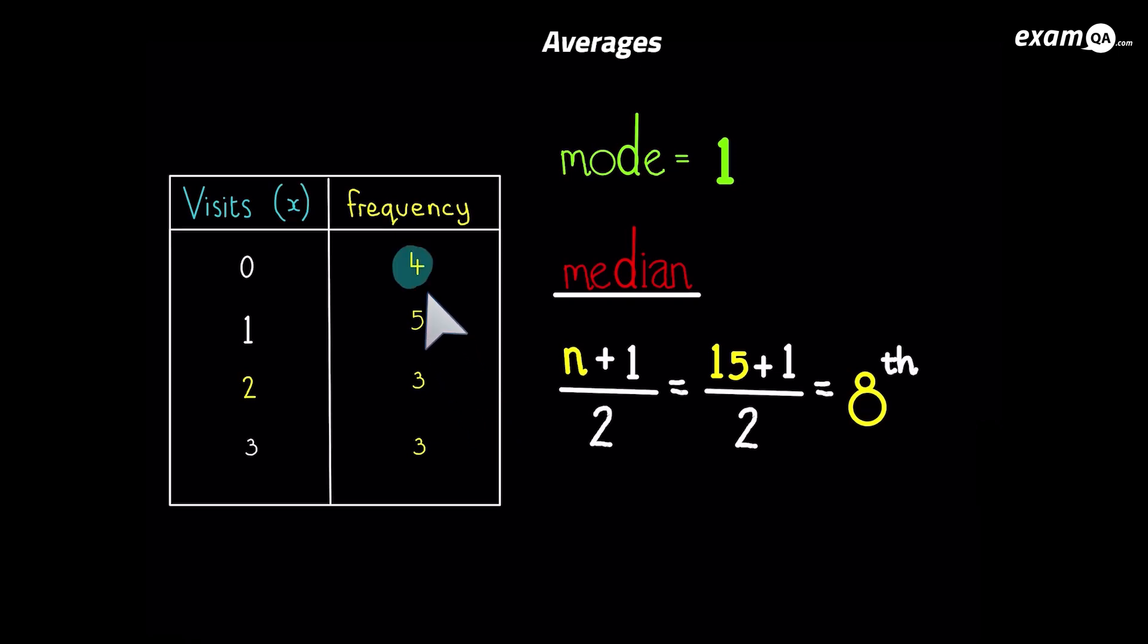So the first four numbers are zero. We know that. The next five numbers are one. Now if we go past the first four numbers and the next five numbers, well, we've gone past the eighth number, haven't we? So we know the eighth number must be amongst those five numbers. So we can comfortably say the eighth number must be one. Because if you had these numbers listed out, you have four zeros, zero, zero, zero, zero, followed by five ones, one, one, one, one, one, and a one. So the eighth number will be a one. And that's our median. Our median is one.